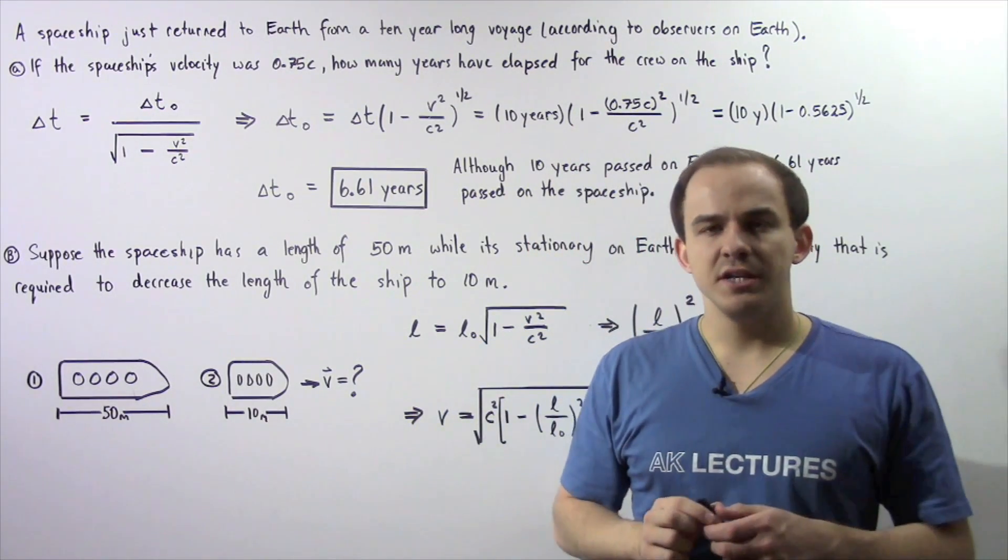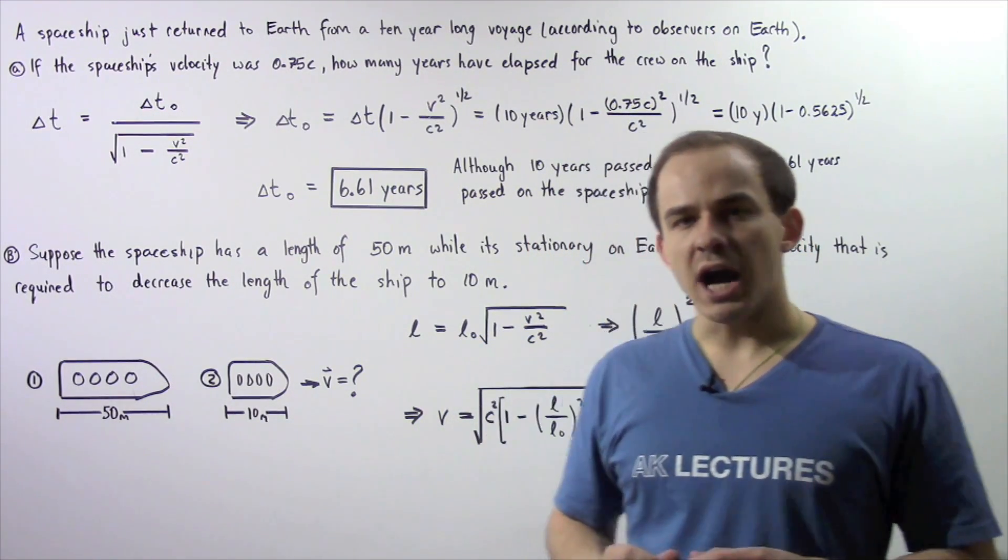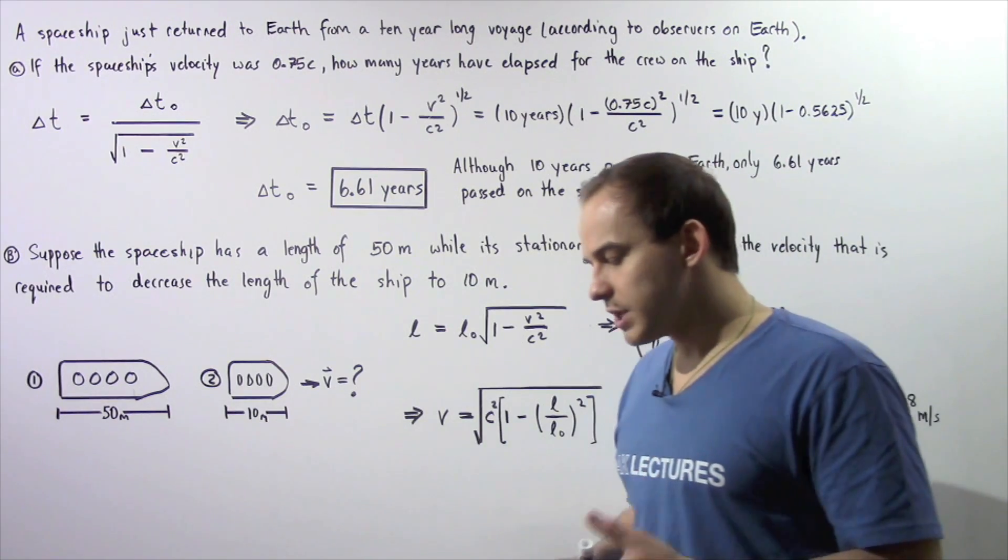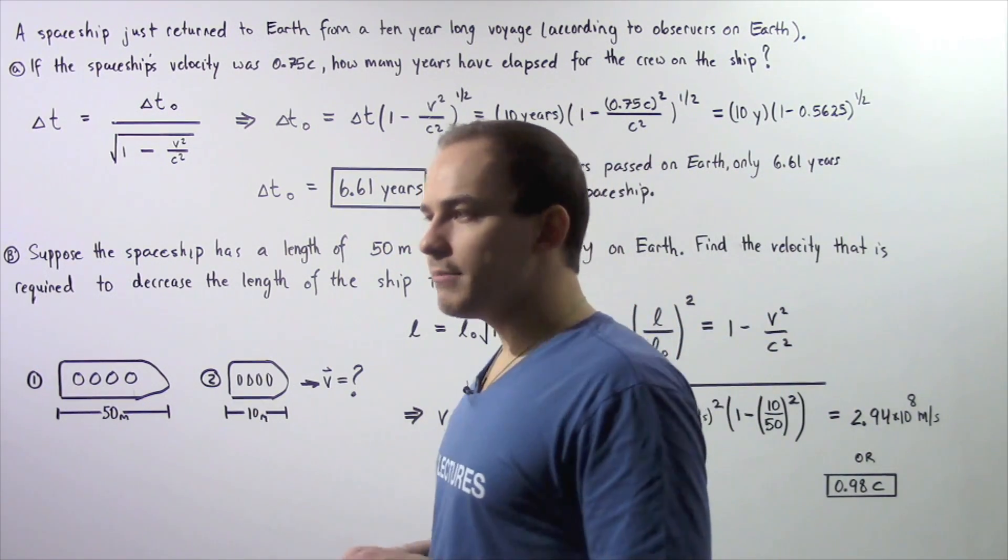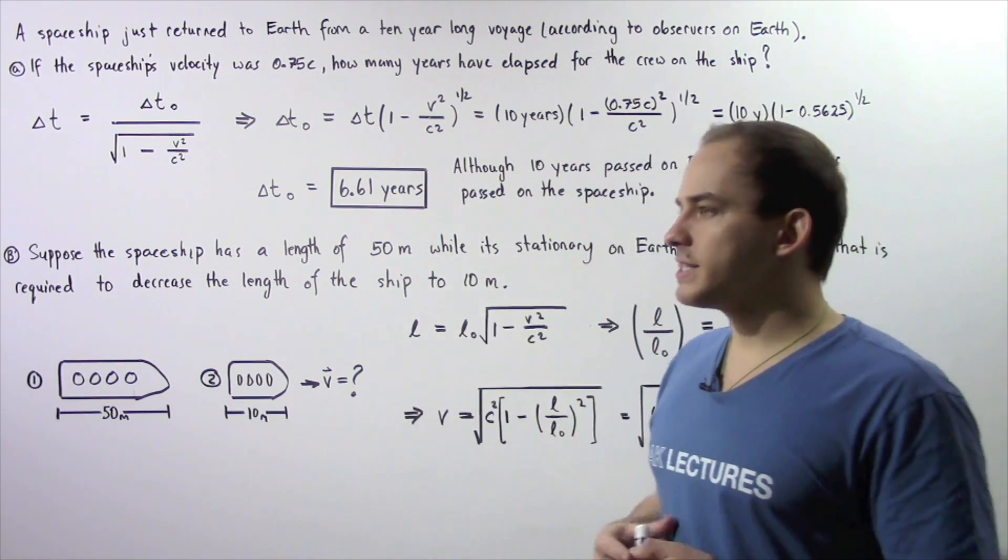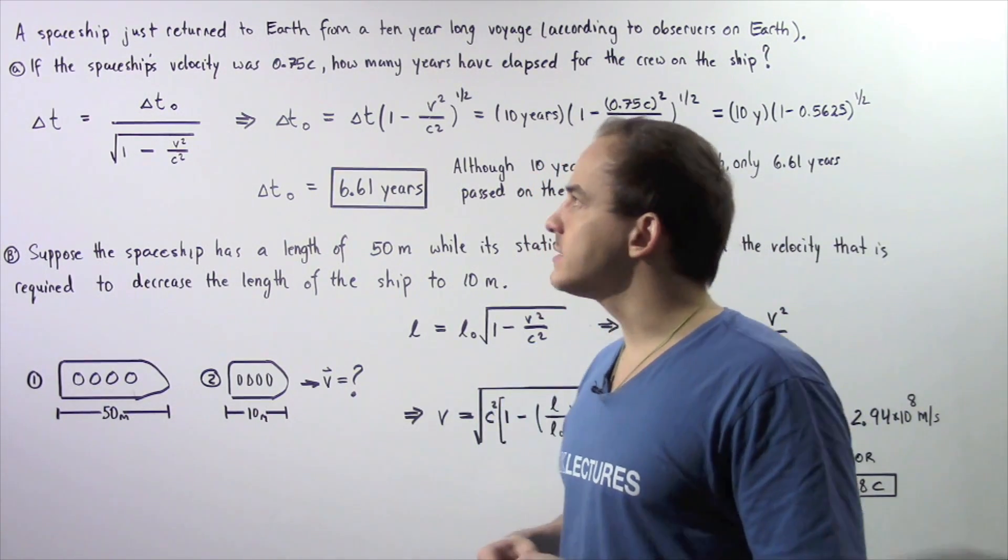As a result of the special theory of relativity, two important concepts were discovered: length contraction and time dilation. Let's look at the following example that deals with these two concepts.